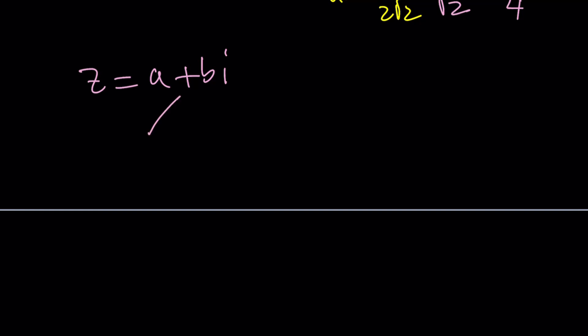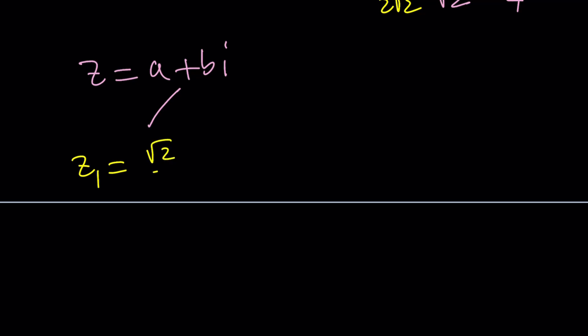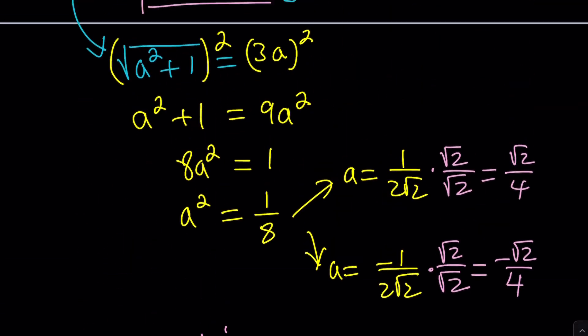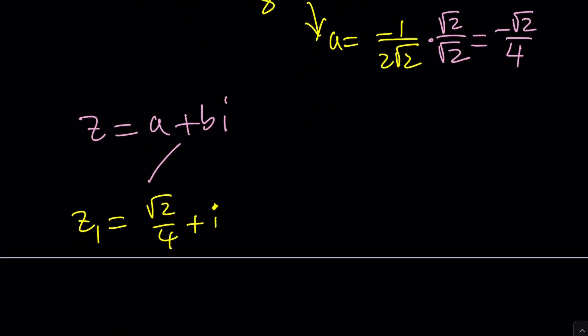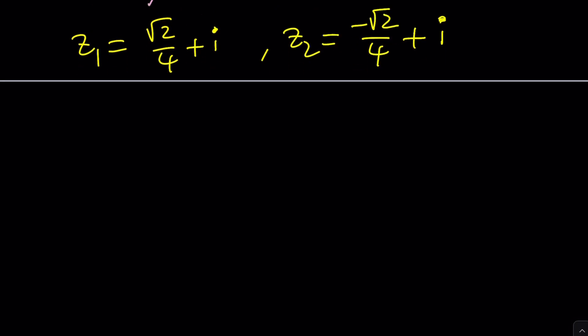We get Z sub 1 as the first solution which can be written as root 2 over 4 plus I, and Z sub 2 is negative root 2 over 4 plus I. The next step could be to check our work. If you go back to the original equation we have 2Z plus Z bar equals the absolute value of Z plus I. Let's just test one of them.